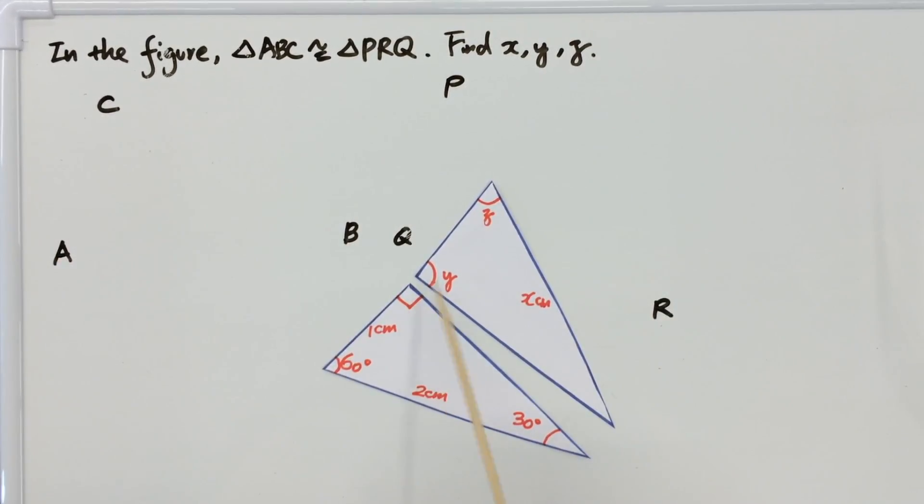And therefore, y and the right angle will be the corresponding angles. z will be corresponding to 60 degrees. And x cm will correspond to this side, 2 cm.